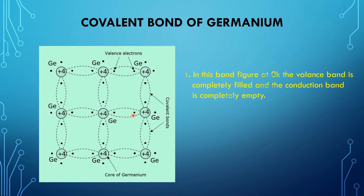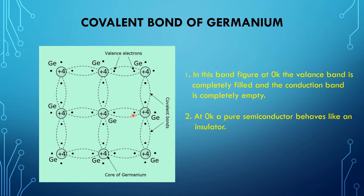The valence electrons bind one atom to another and they are not available for electrical conduction in the absence of any thermal excitation. At 0 Kelvin, the valence band is completely filled and the conduction band is completely empty. This means at 0 Kelvin, a pure semiconductor behaves like an insulator — no electrical conductivity will occur through the germanium material. This is the two-dimensional covalent bond structure of germanium crystal.